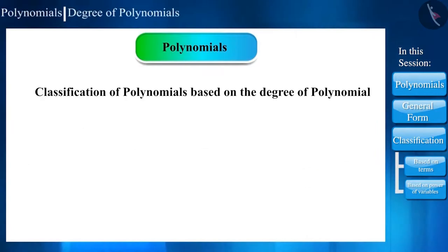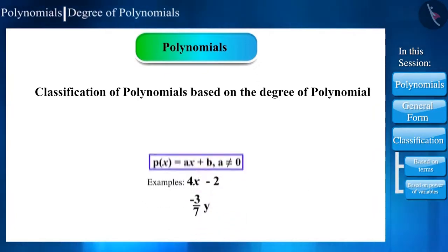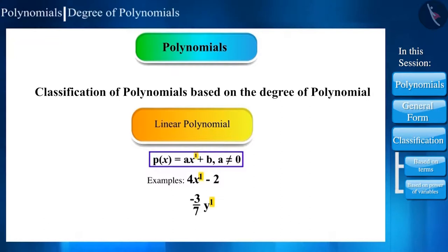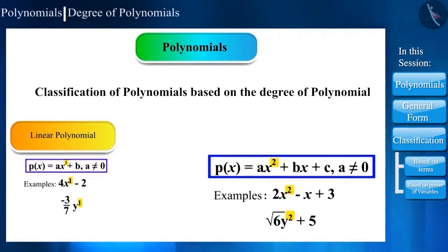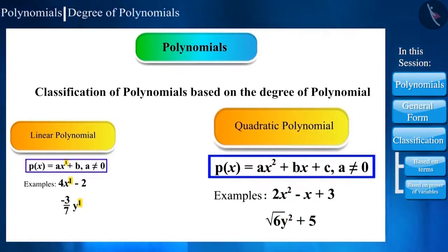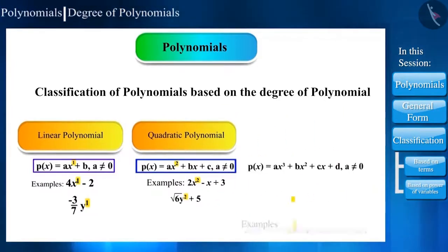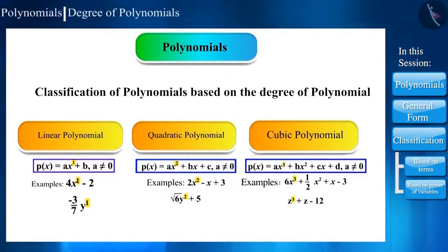Similarly, polynomials are classified based on their degree. Polynomials having degree 1 are called linear polynomials, polynomials having degree 2 are called quadratic polynomials, and polynomials having degree 3 are called cubic polynomials.